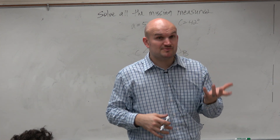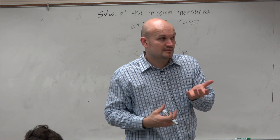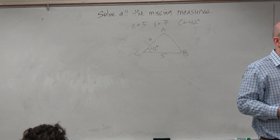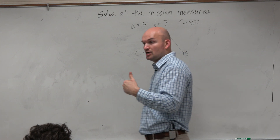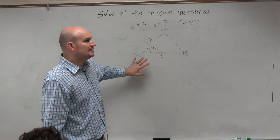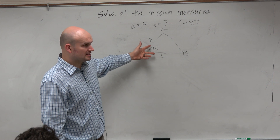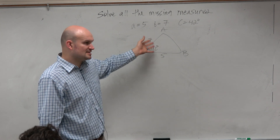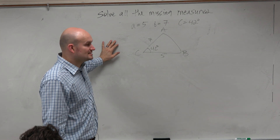You guys recognize we can't use the law of sines here, right? We don't have a ratio to use the law of sines. We are going to have to use the law of cosines. We don't have a side length paired with its angle, and to use the law of sines you have to have a ratio. So we're going to have to use the law of cosines.